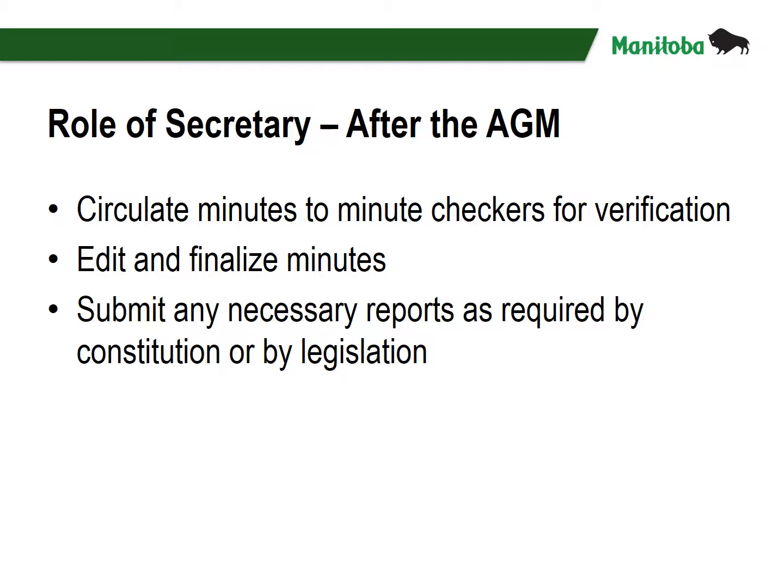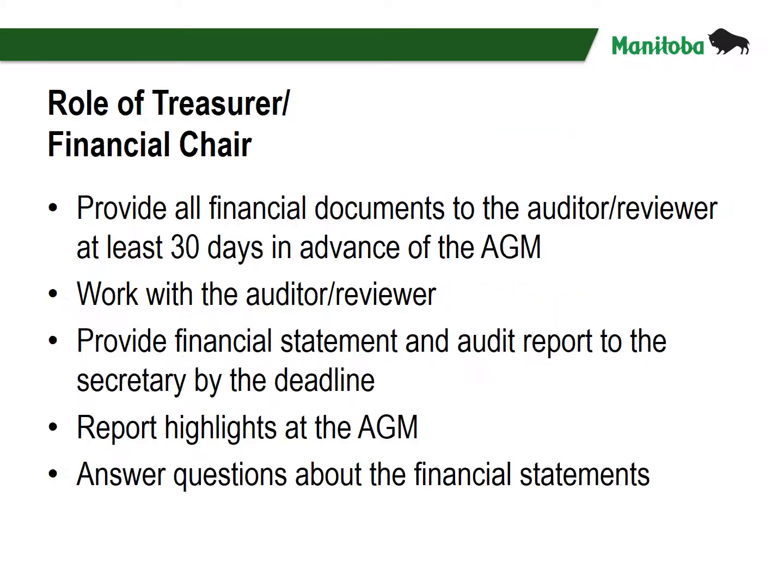The role of the secretary continues after the AGM, to include circulating the minutes to minute checkers for verification, editing and finalizing the minutes, and submitting any necessary reports as required by constitution or by legislation. The role of the treasurer or financial chair: provide all financial documents to the auditor or reviewer at least 30 days in advance of the AGM, work with the auditor or reviewer during the process, be prepared to answer questions and provide any additional information or documentation, provide the completed financial statement and audit report to the secretary, and report the highlights at the AGM and answer questions about the financial statements.